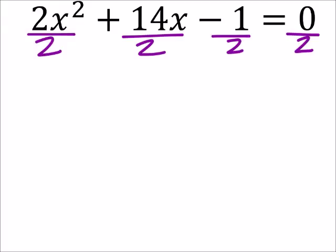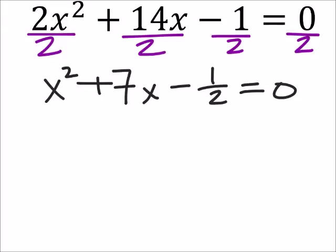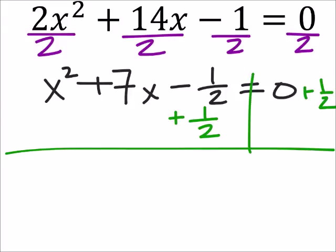So that's going to change this now into x squared plus 7x minus 1 half equals zero. So we want that binomial and we're going to have to isolate all the x's by themselves. So we need to add 1 half to both sides. And we get x squared plus 7x equals positive 1 half.